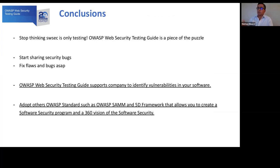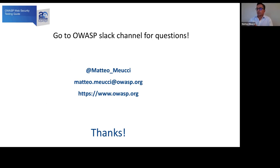In conclusion, we have to stop thinking that software security is only about testing. The OWASP Web Security Testing Guide is really important and many companies worldwide are implementing it, but it is just one piece of the puzzle. It is really important to start sharing security bugs, fix flows, and bugs as soon as possible. The OWASP Testing Guide can support companies in identifying vulnerabilities, but it is equally important to adopt all OWASP security standards, such as the OWASP five-dimensional software security framework, to create a complete software security roadmap. Thank you for joining the talk.